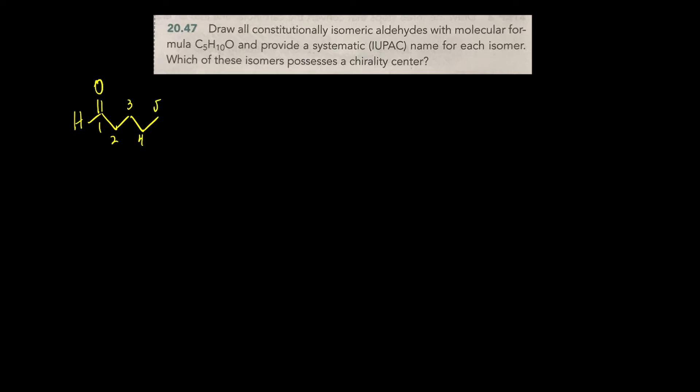So we've got five carbons, one oxygen, and let's just count the hydrogens. 1, 2, 3, 4, 5, 6, 7, 8, 9, 10. That's great. I have five carbons in a straight chain with no branches, no rings. And we have an aldehyde. So the name of this would be pentanal.